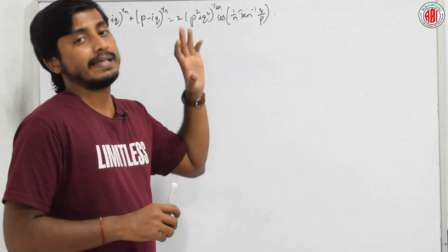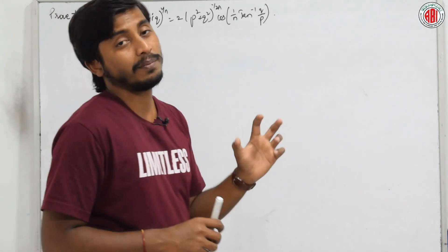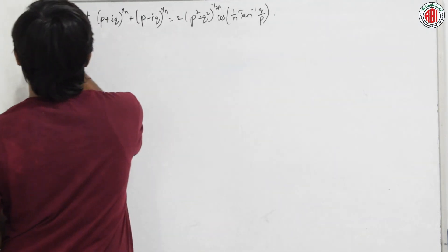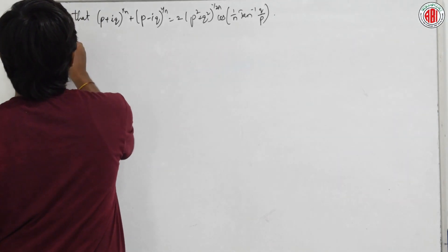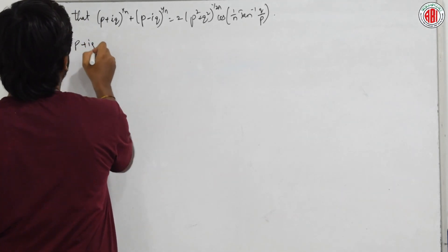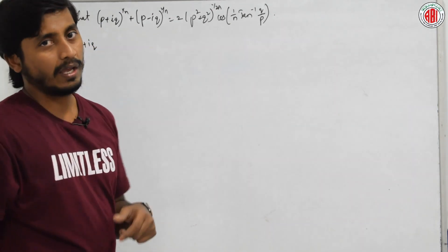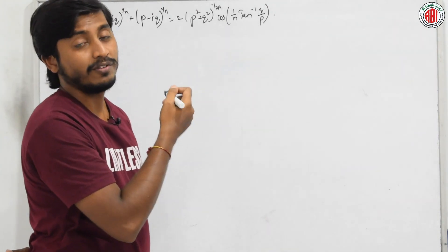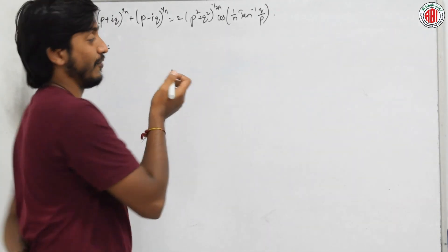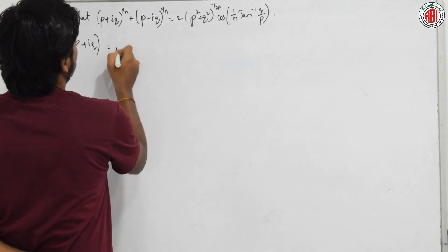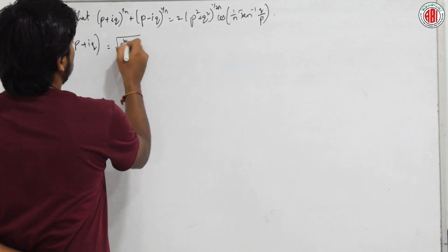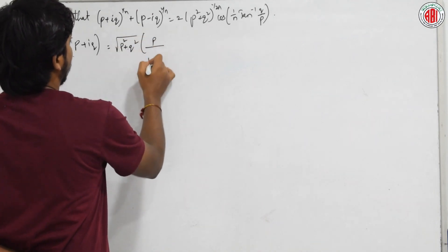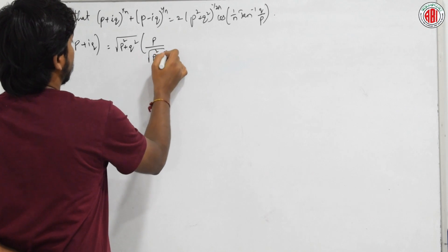Instead of giving a simple form, they gave a generalized form. Let us take only p + iq and convert it to modulus-amplitude form. We will multiply and divide by √(p² + q²).